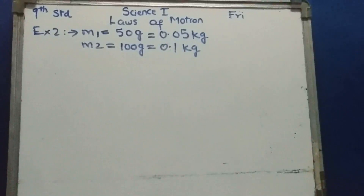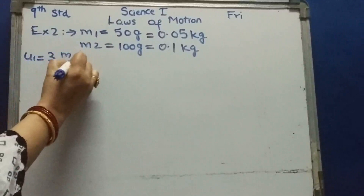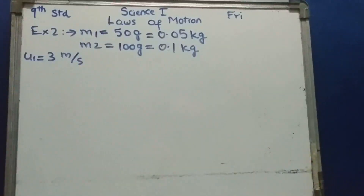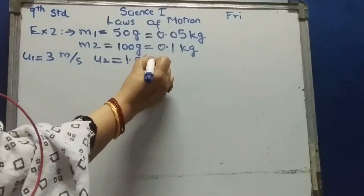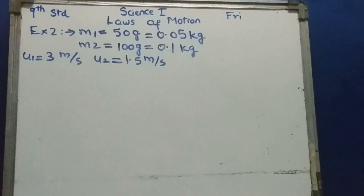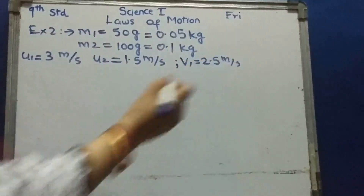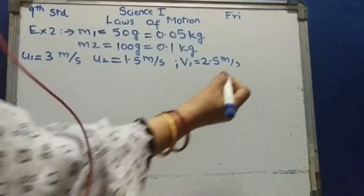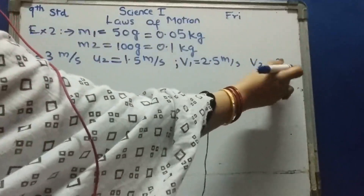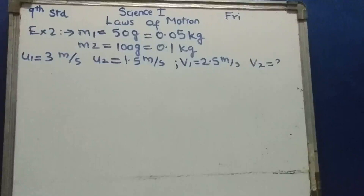Initial velocity of the first object V1 is equal to 3 meters per second. Initial velocity of the second object V2 is equal to 1.5 meters per second. Final velocity of the second object is equal to 2.5 meters per second. According to the law of conservation of momentum, total initial momentum is equal to total final momentum.